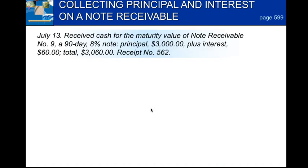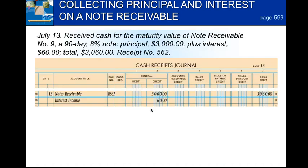When we collect the principal and interest on a notes receivable, we received cash for the maturity value of notes receivable number nine, which is a 90-day 8% note. The principal is $3,000 plus interest of $60 for a total of $3,060. It's receipt number 562. We're receiving cash, so we're going to go to our cash receipts journal.